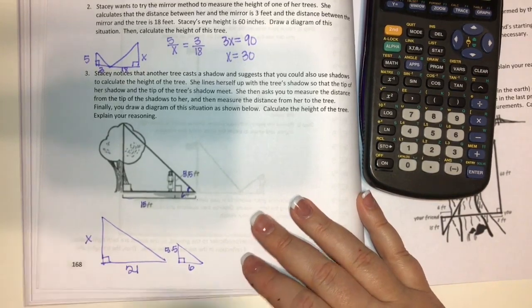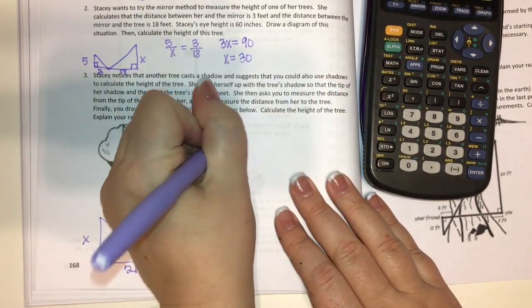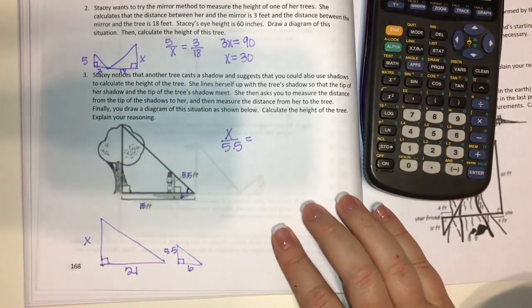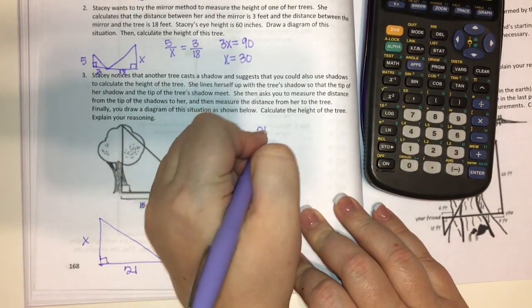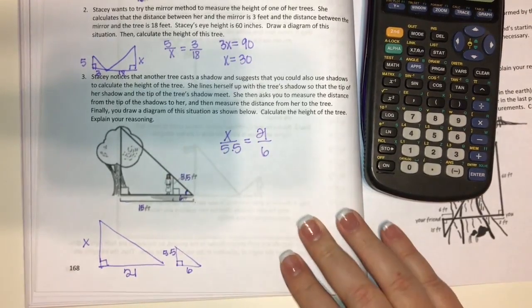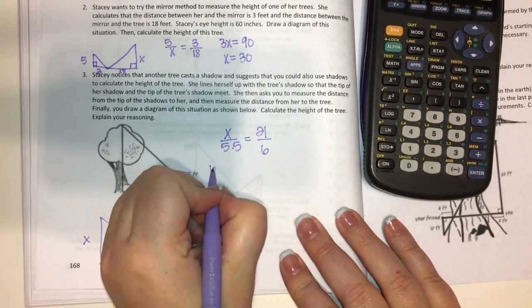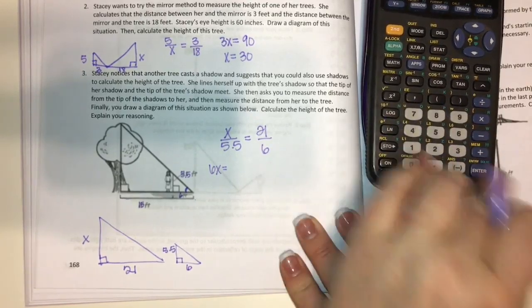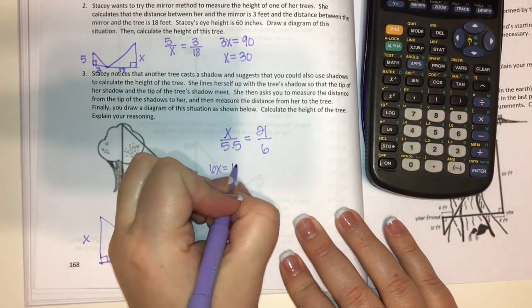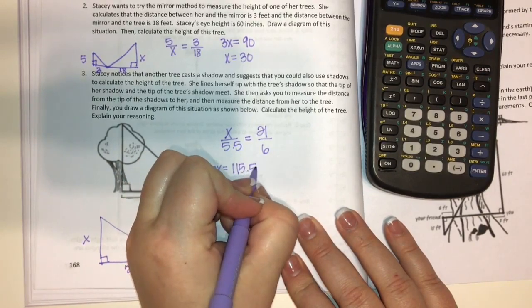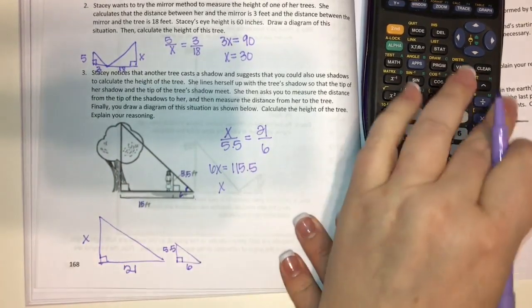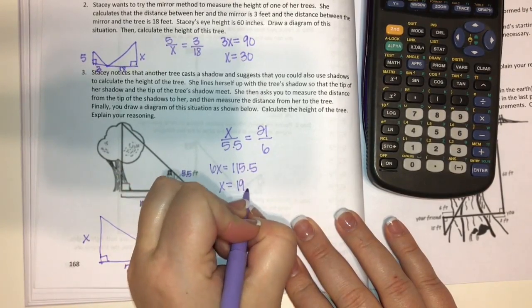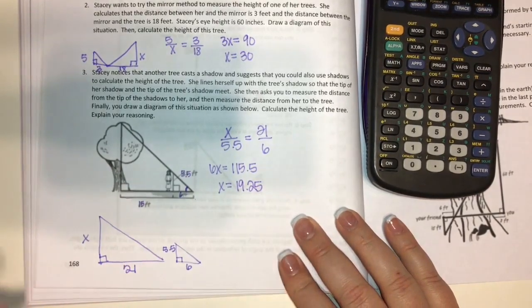Now pretty simple. We set up our proportion X over 5.5 equals 21 over 6. So we cross multiply, we get 6X equals 5.5 times 21. That gives me 115.5. Now I divide that by six and the tree is 19.25 feet tall.